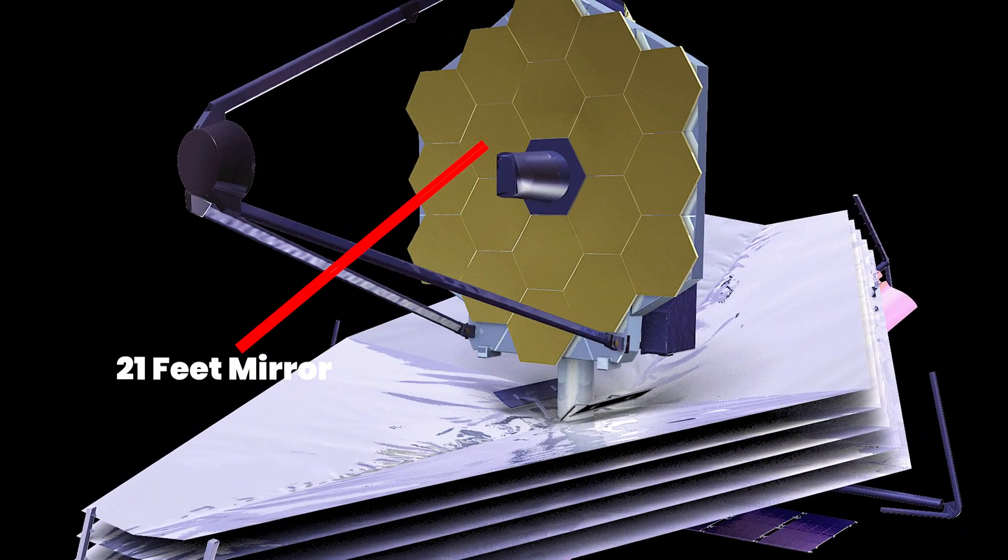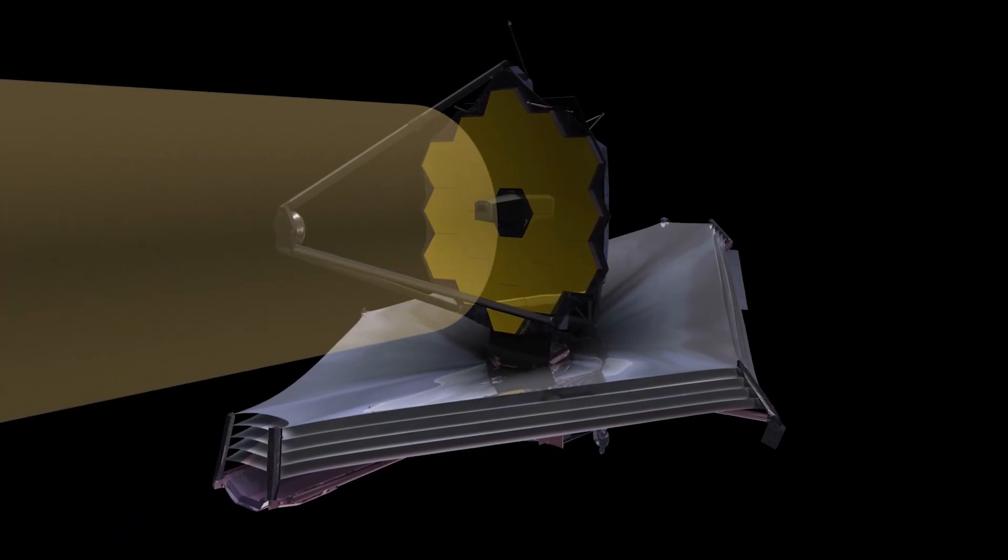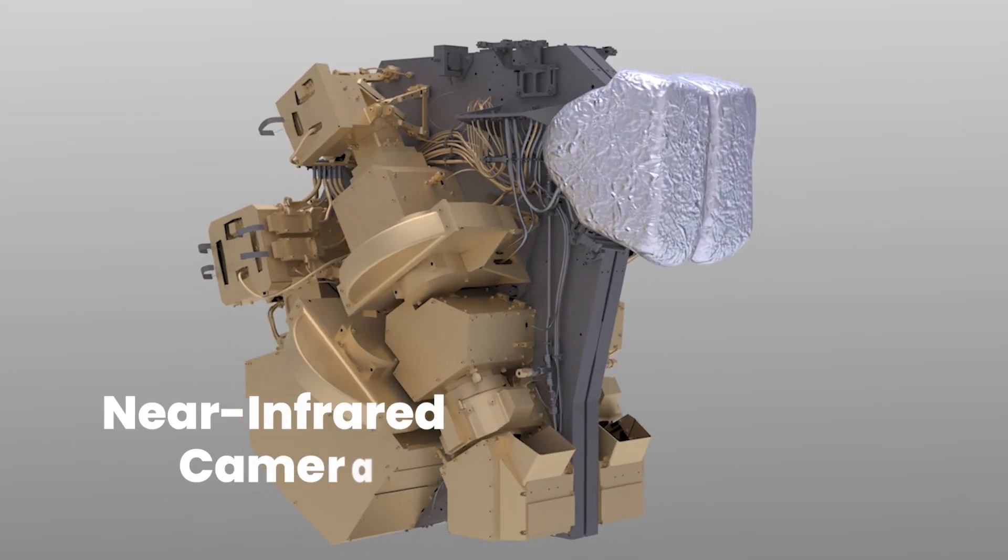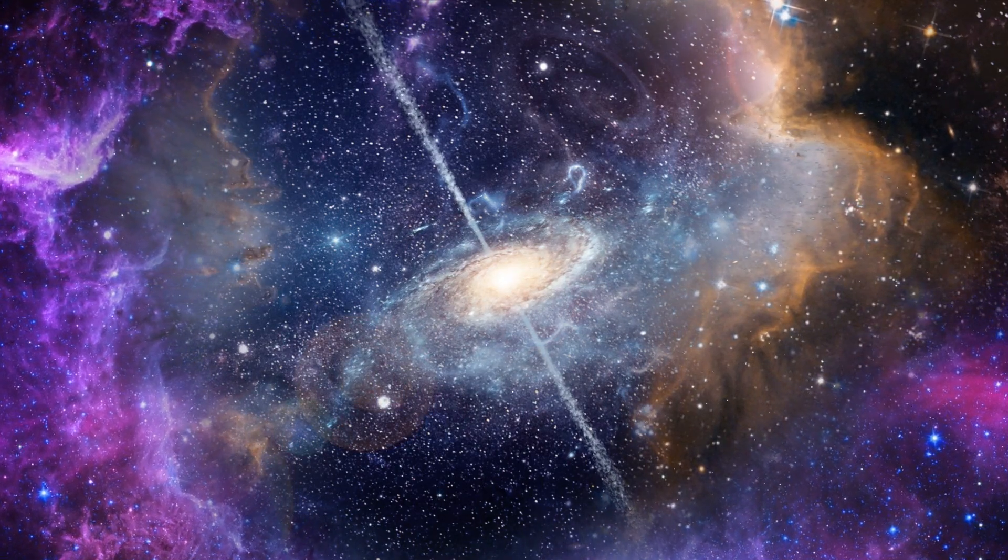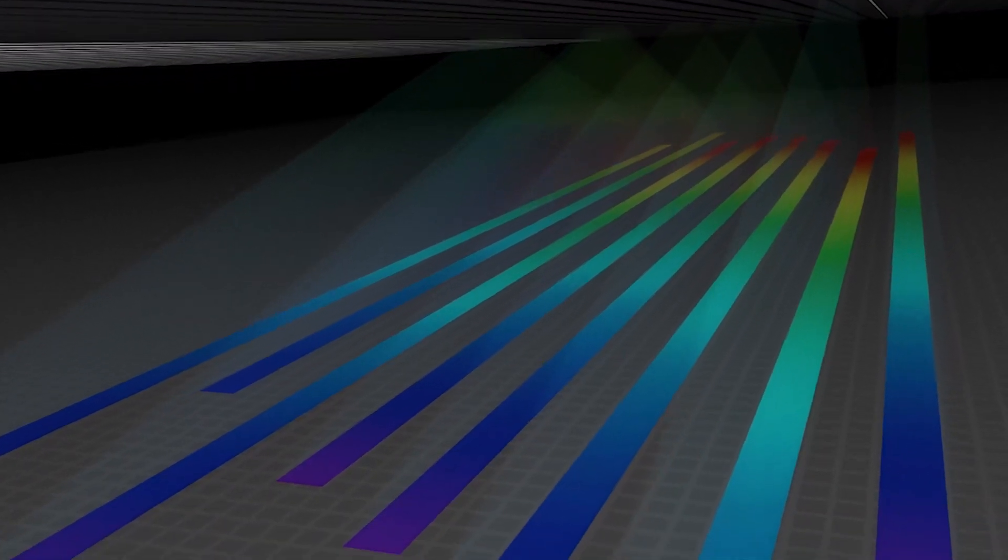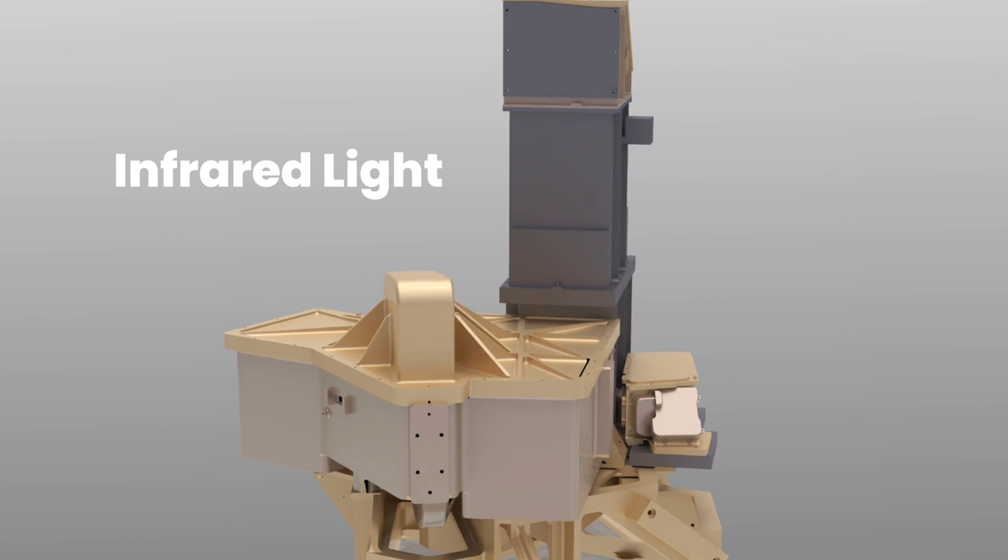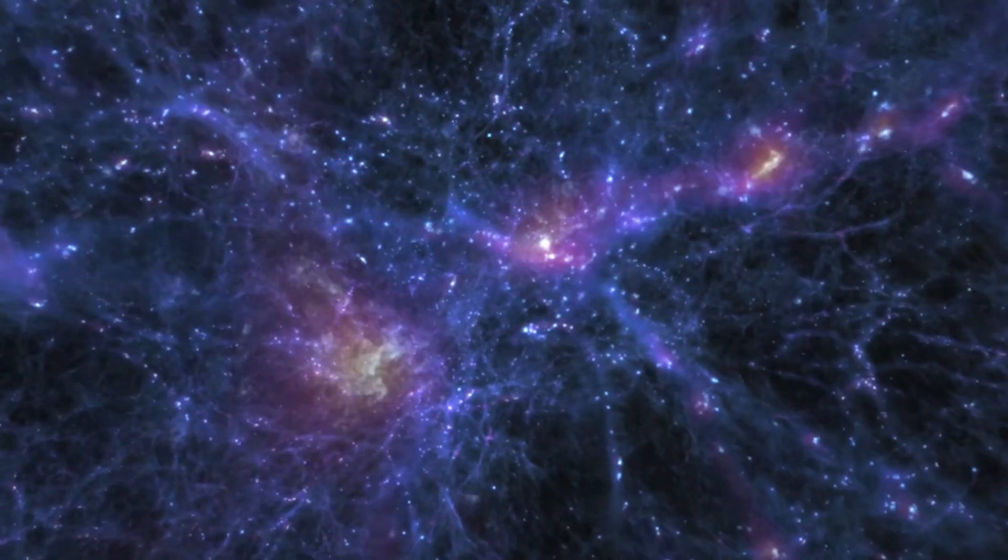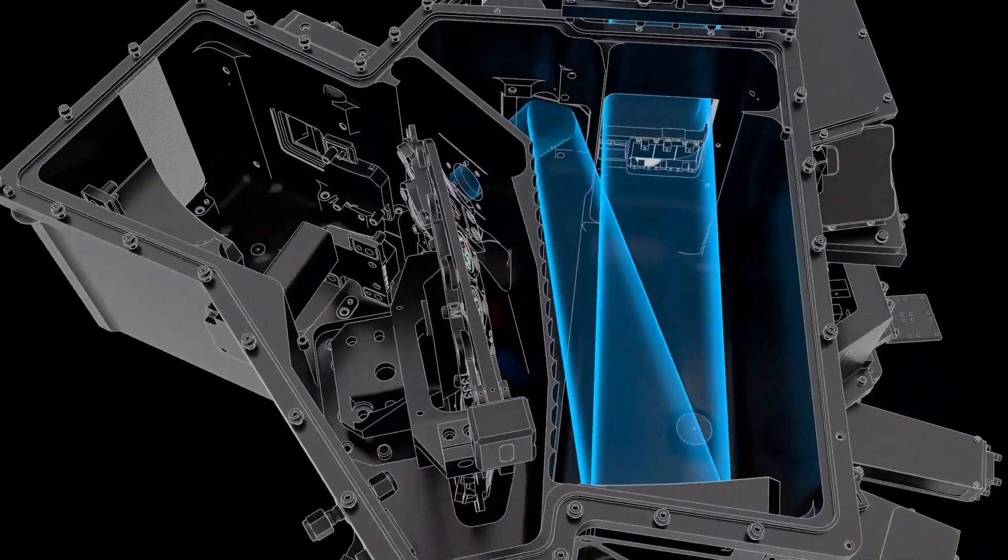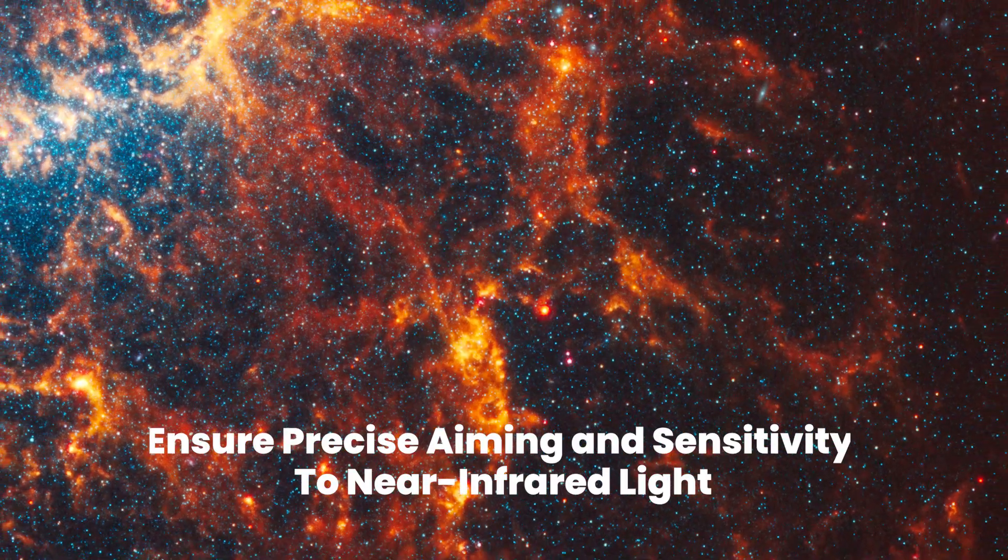At its core lies a massive 21-foot mirror that collects and redirects light to its instruments. The James Webb Telescope boasts four specialized instruments. The near-infrared camera captures stunning images of galaxies and nebulae, while the near-infrared spectrograph breaks down light to provide insights into celestial objects. The mid-infrared instrument focuses on capturing infrared light, facilitating studies of the early universe, exoplanets, and our solar system. Lastly, the fine guidance sensor, near-infrared imager, and slitless spectrograph ensure precise aiming and sensitivity to near-infrared light.